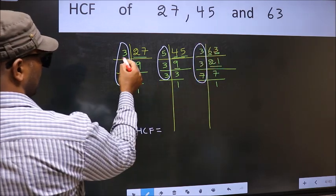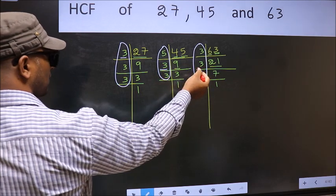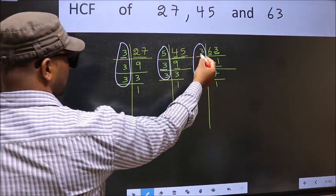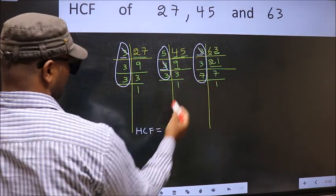Starting with the number 3. Do we have 3 here? Yes. Go to the next place. Do we have 3 here? Yes. So cut 3 right here.